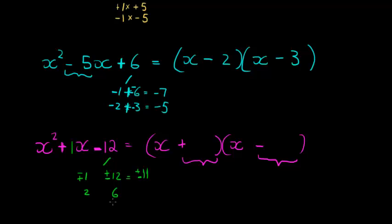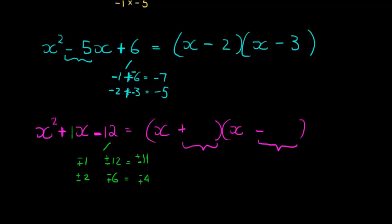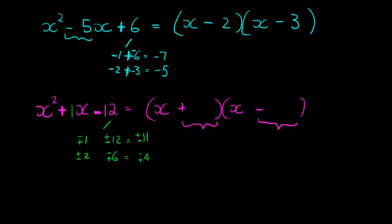If I have a plus 2 and a minus 6, I get negative 4. If I have a minus 2 and positive 6, I get positive 4. Again, I don't get close to 1. Let's try another set of numbers that will multiply to give me 12. 3 and 4.